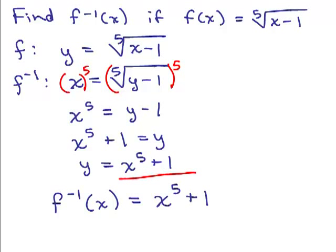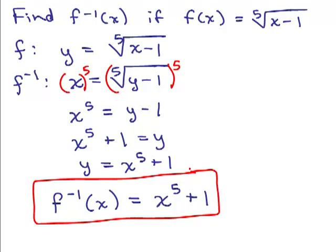As a quick check: in f of x, if you put in 1 for x you get the fifth root of 0, which is 0. So the ordered pair is (1, 0). Putting 0 into f inverse gives 0 to the fifth plus 1, which equals 1 — giving ordered pair (0, 1). Notice that (1, 0) is on f of x, and (0, 1) is on f inverse of x, confirming the x and y values are switched.